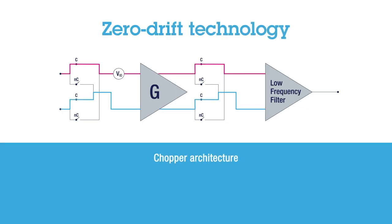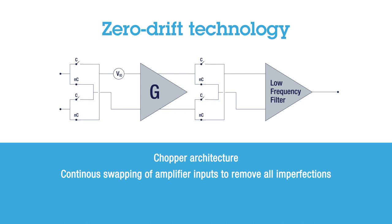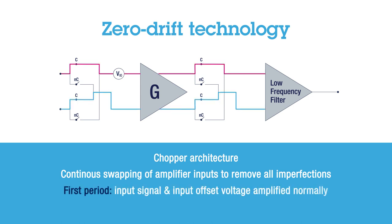The basic idea of zero-drift technology, also called chopper architecture, is the continuous swapping of amplifier inputs to remove all imperfections. In the first period, the input signal together with the input offset voltage is amplified in a normal way.